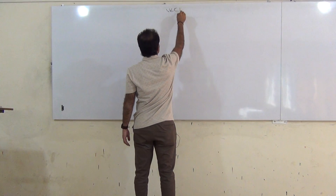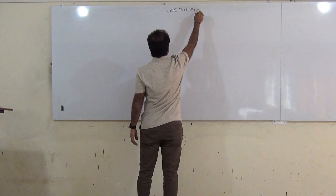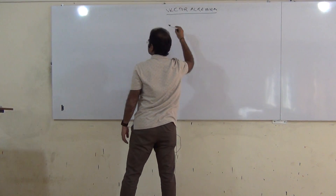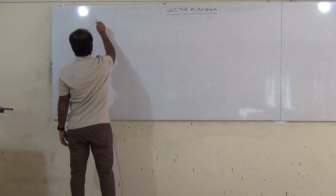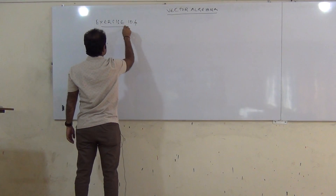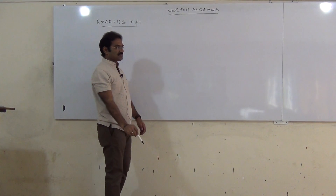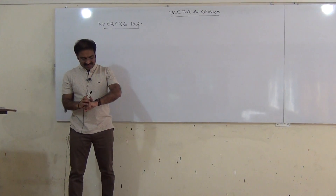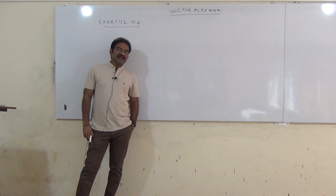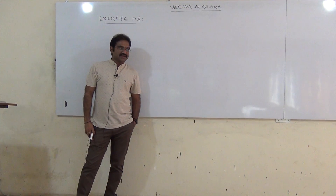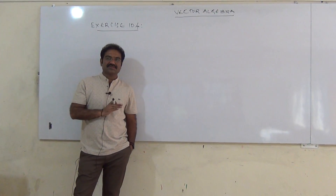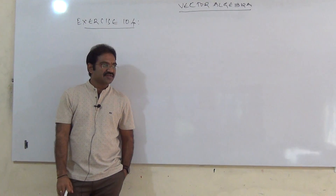Vector algebra, Exercise 10.4 — the last exercise of this chapter. Today I am going to complete this chapter. There are two types of products: one is a scalar product and another one is a vector product. Exercise 10.3 is associated with the scalar product, and Exercise 10.4 is associated with the vector product.